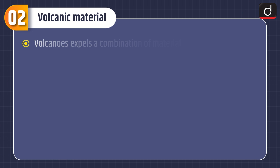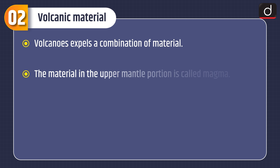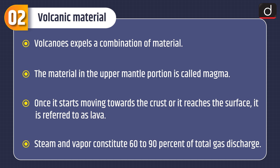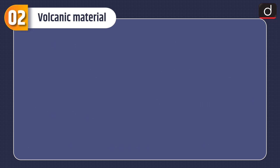Now let's discuss about volcanic material. Volcanoes expel a combination of material. The material in the upper mantle portion is called magma. Once it starts moving towards the crust or reaches the surface, it is referred to as lava. Steam and vapour constitute 60–90% of total gas discharge.